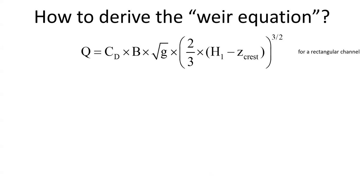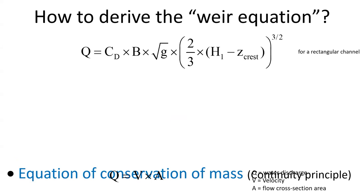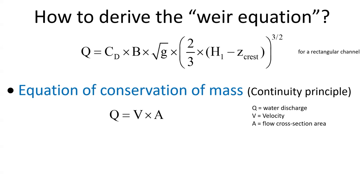How do we derive this equation? The Weir Equation is based upon fundamental principles of fluid mechanics and open channel hydraulics. First, the equation of conservation of mass indicates that the volumetric discharge is the velocity times the cross-sectional area of the flow.